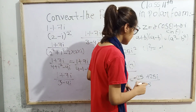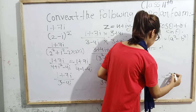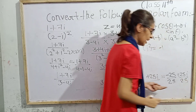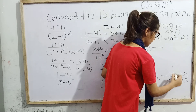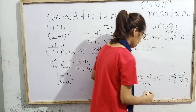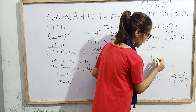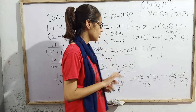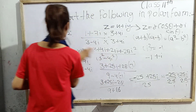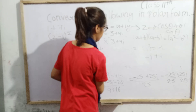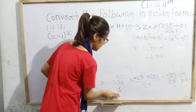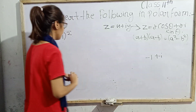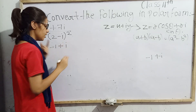We can split this as -25/25 + 25i/25. Cancelling, we get -1 + i. We have finally obtained a complex number: z = -1 + i.